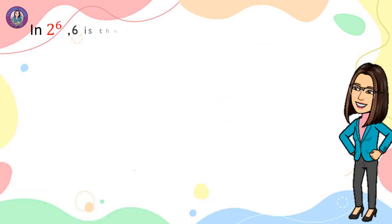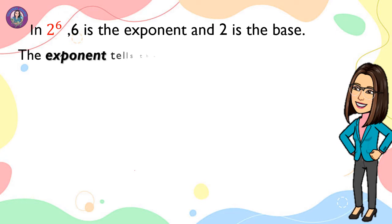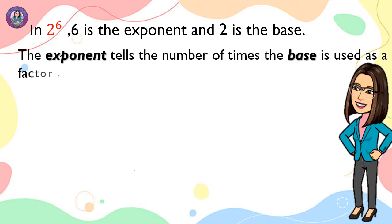In 2 to the 6th power, 6 is the exponent and 2 is the base. The exponent tells the number of times the base is used as a factor.